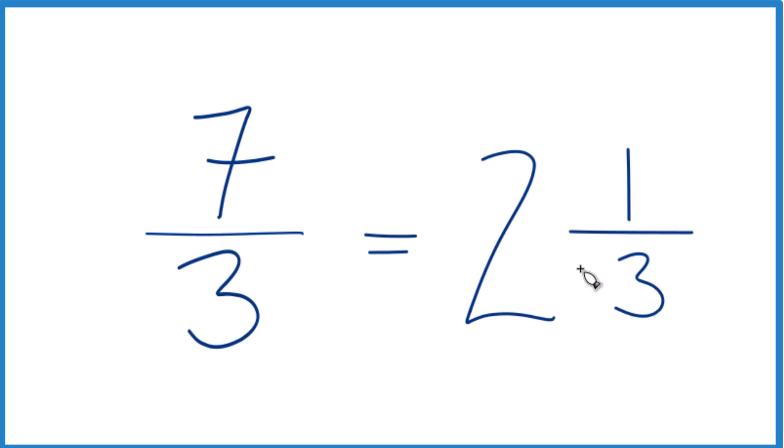So you can check this because 2 times 3, that's 6, plus 1, that gives you 7, the numerator. And the 3, that's the denominator. We just keep that the same.